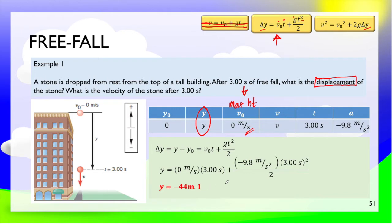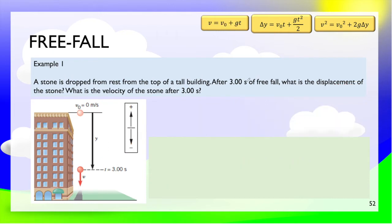That is the answer for number one. Always remember, it's okay to have a negative answer, because that means the displacement is below the starting point — negative means below, positive means above. Now let's answer the second question.